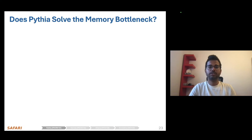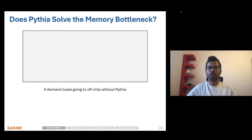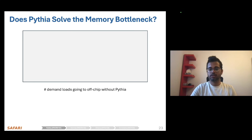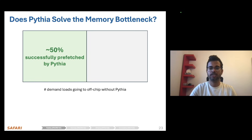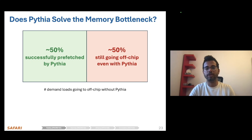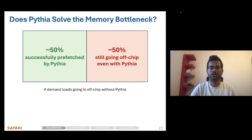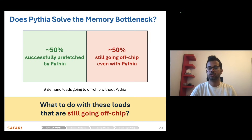With that said, Pythia provides a performance improvement, but does that mean it solves the memory bottleneck by itself? The answer is no. If we look at the number of demands going to off-chip main memory in the absence of Pythia, we see that in the presence of Pythia, half of these load requests are successfully prefetched into the on-chip caches, but the remaining half are still going to main memory. These are the performance-critical memory requests. So the question is: what do we do with these off-chip loads?